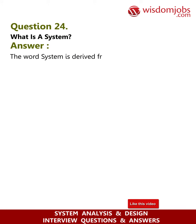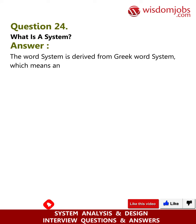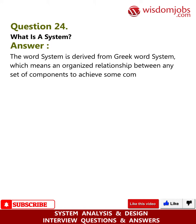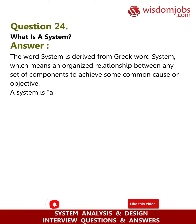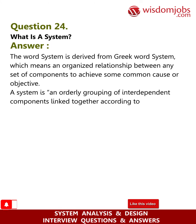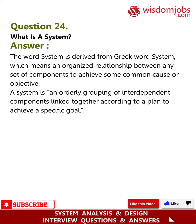Question 24: What is a system? Answer: The word system is derived from the Greek word meaning an organized relationship between any set of components to achieve some common cause or objective. A system is an orderly grouping of interdependent components linked together according to a plan to achieve a specific goal.